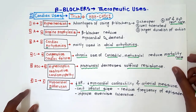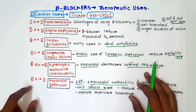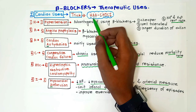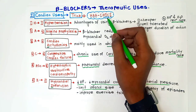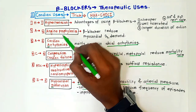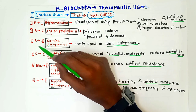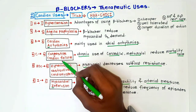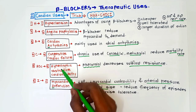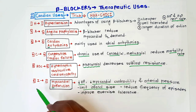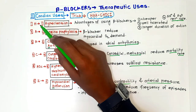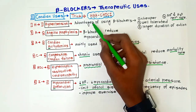Next are the therapeutic uses of beta blockers. First, cardiac uses — the trick to remember is HEART OC: H for hypertension, A for angina prophylaxis, second A for arrhythmias, C for congestive cardiac failure, HOC for hypertrophic obstructive cardiomyopathy, and I for myocardial infarction.